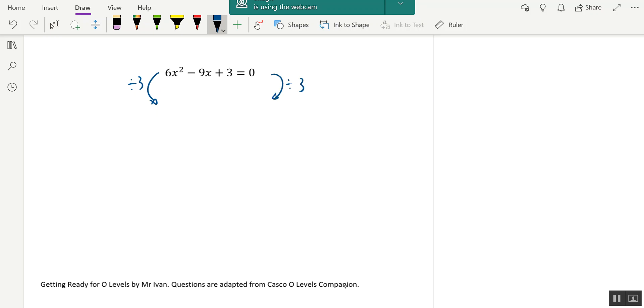This step, you don't have to say. You don't have to write, but you can just immediately come up to 2x² minus 3x plus 1 equals to 0.